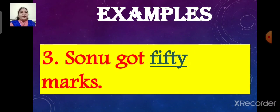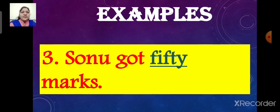Sonu got 50 marks. Here, the underlined word is 50. So the word 50 is an adjective. It describes the noun marks. It tells us how many marks Sonu got. So the word 50 is an adjective of number.